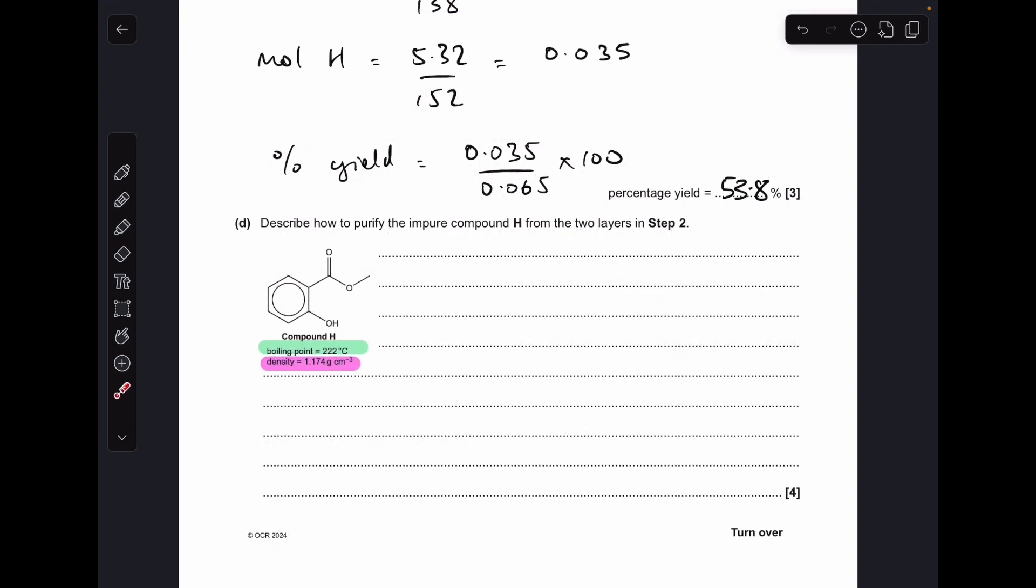Part D, the purification of this organic liquid product. You'll notice I've highlighted the boiling point in green and the density in pink. We need to refer to those in our answer. First, we add the product mixture to a separating funnel. We want the lower layer because the density of compound H is higher than water. So we collect the lower layer containing H.